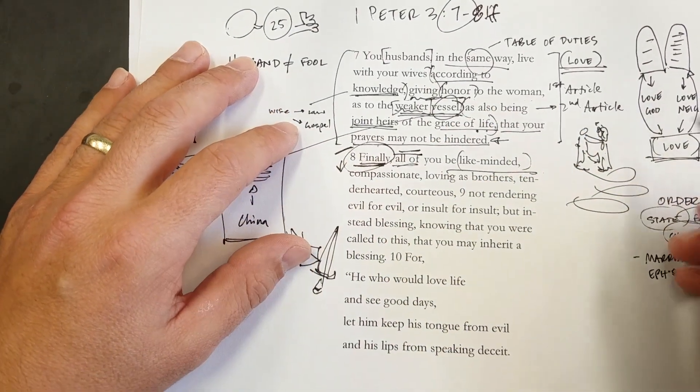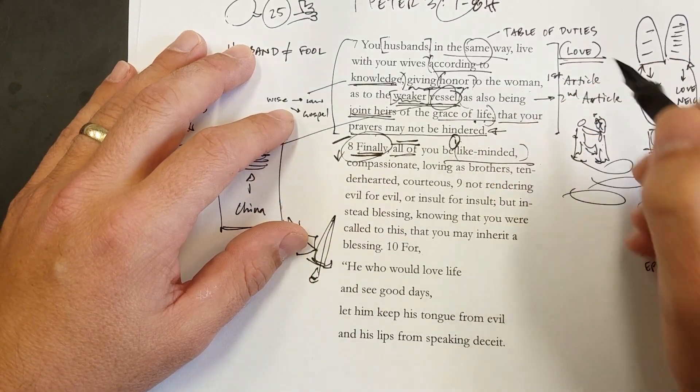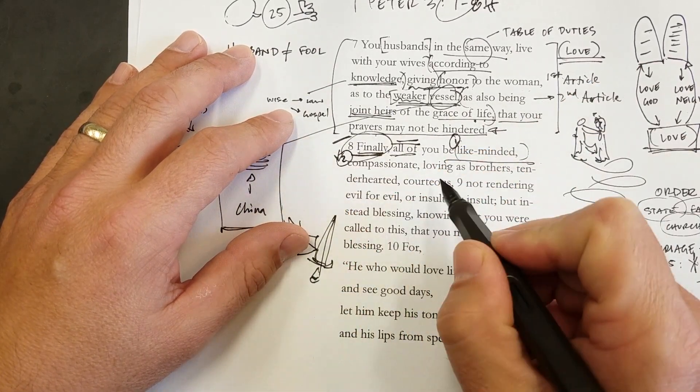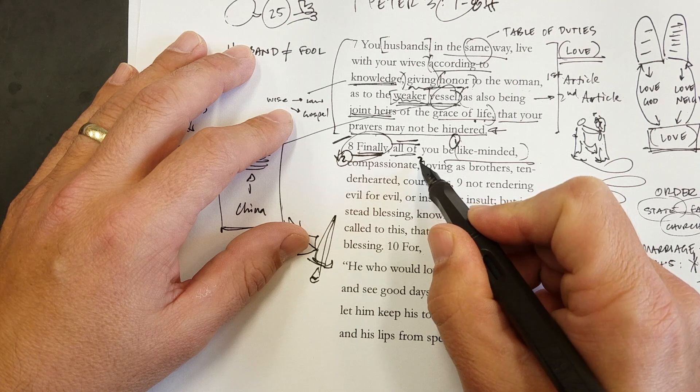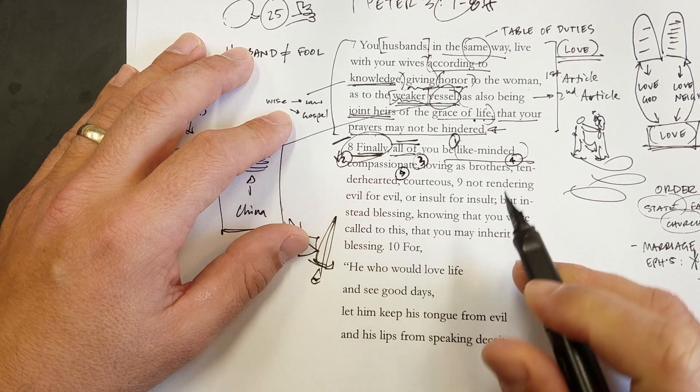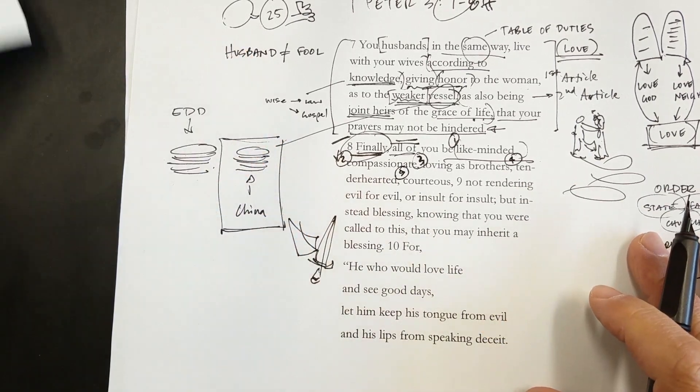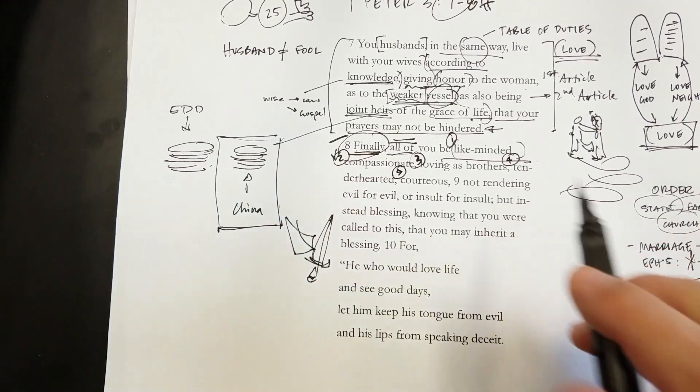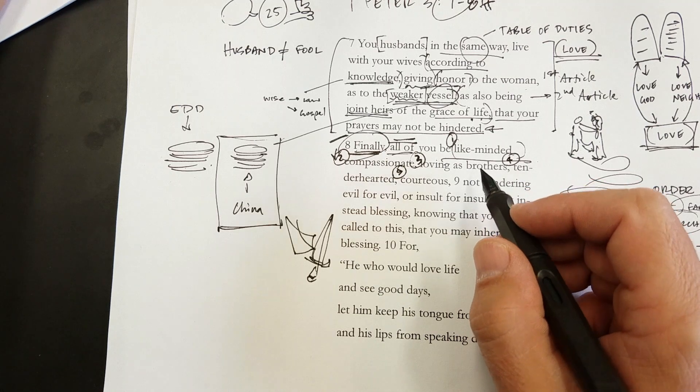And then Peter's going to give us a list. One, be like-minded. Two, compassionate. Three, loving as brothers. Four, tender-hearted. Five, courteous. A list of five words, almost exclusively used here by Peter.